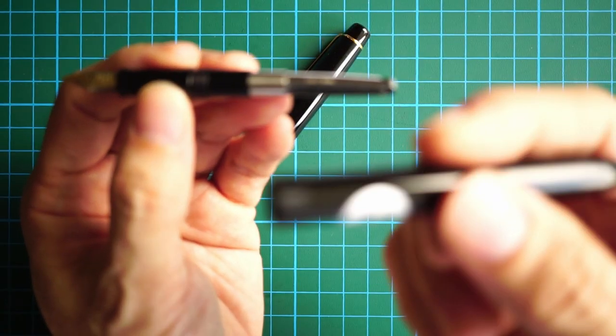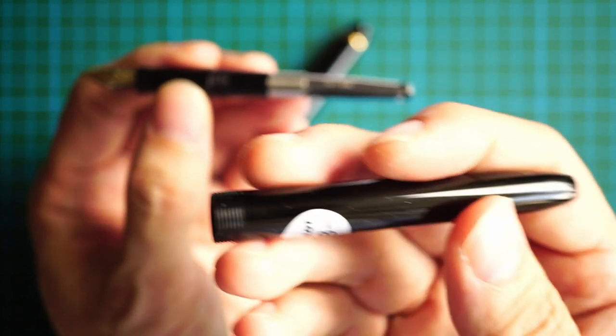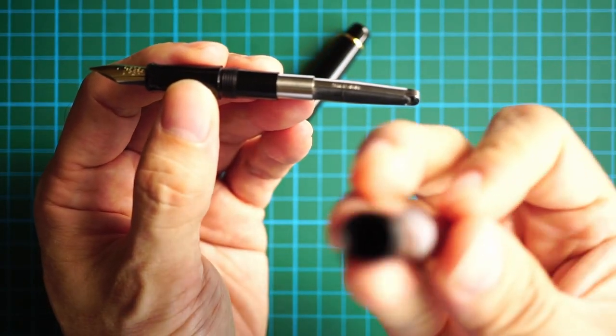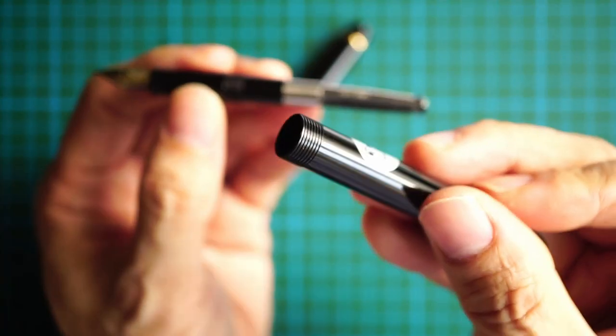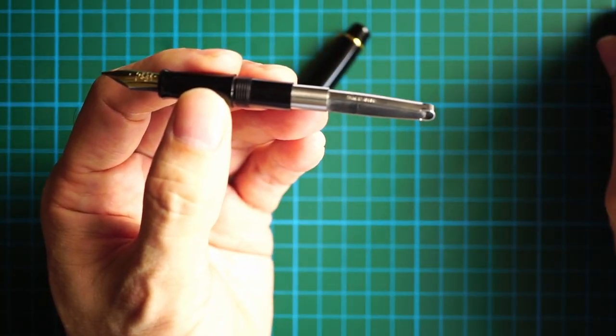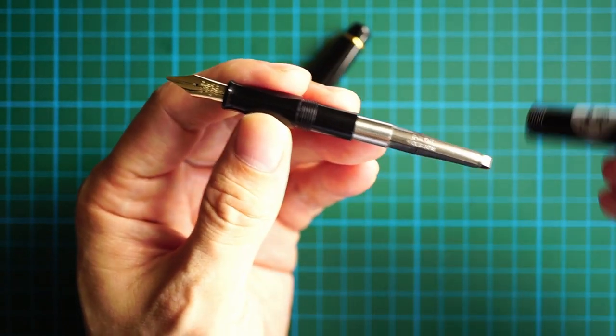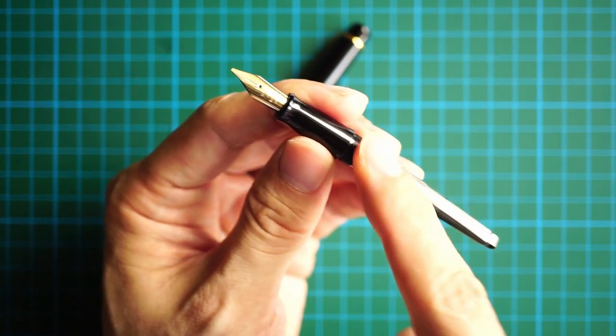Body-wise, nothing much to talk about. It's a very tapered, short body, plastic threads as you saw just now. And then you have the body of the pen or the gripping area itself, which is also made of plastic.